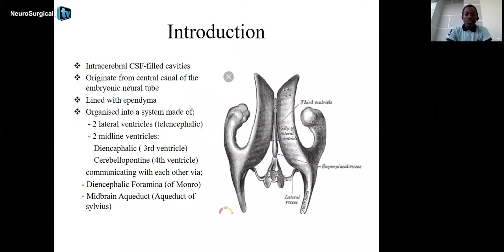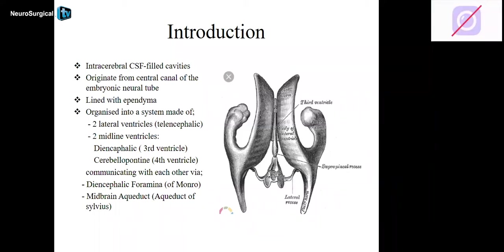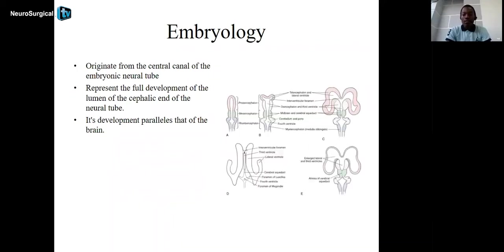Ventricles are intracerebral CSF-filled cavities. They originate from the central canal of the embryonic neural tube and are lined with ependymal cells. In the adult brain, they are organized in a system of two lateral ventricles, and two midline ventricles — the diencephalic ventricle (third ventricle) and the cerebellopontine ventricle (fourth ventricle). The two lateral ventricles communicate with the third through the foramen of Monroe, and the third communicates with the fourth through the cerebral aqueduct or aqueduct of Sylvius.